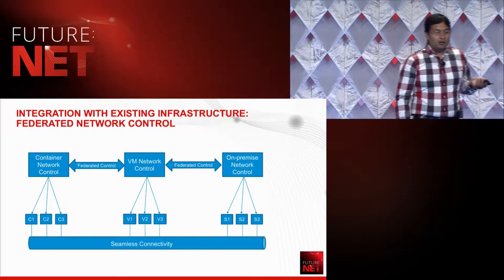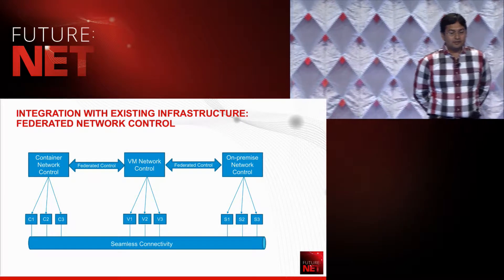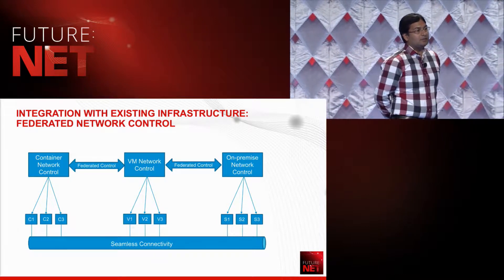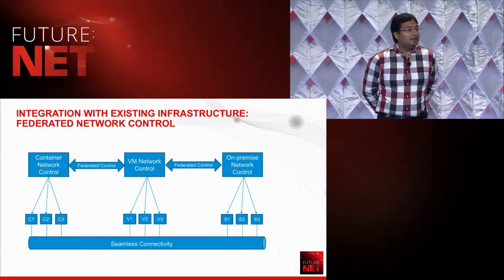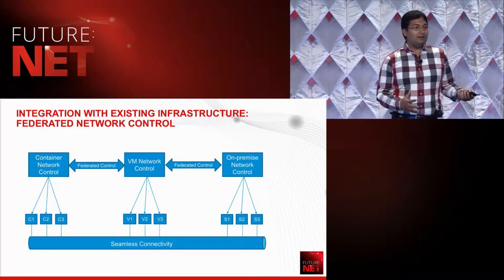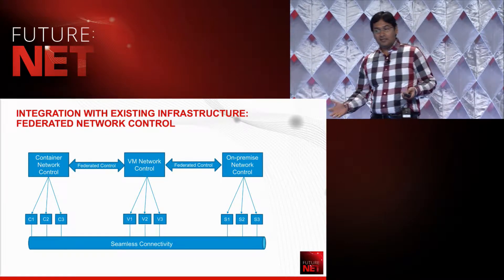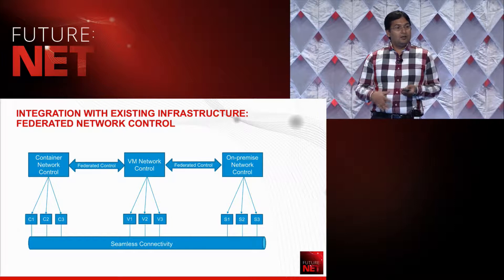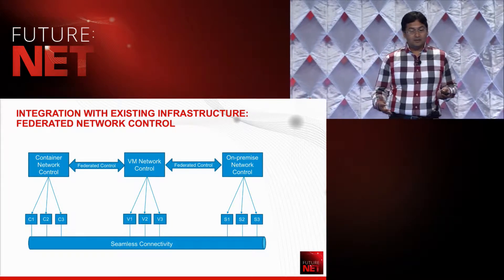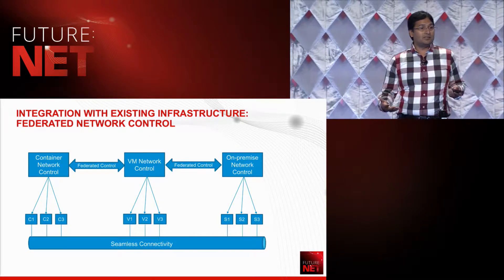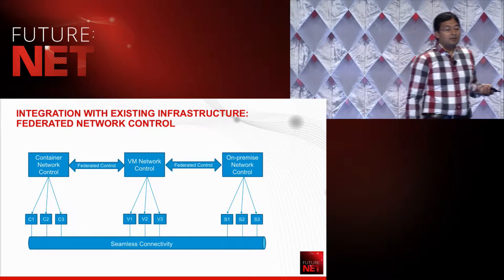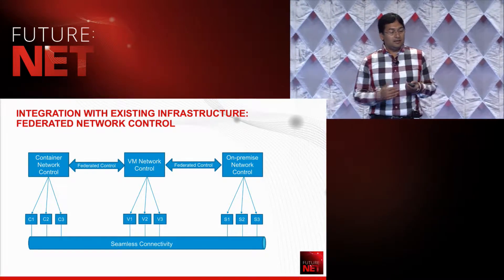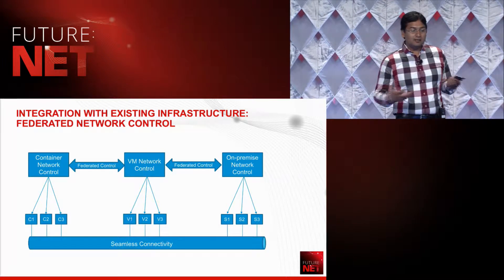Let me start with the first problem customers talk about: integration with existing infrastructure. One of the things we've been working towards is what we call federated network control. Customers may have different network control planes — a container-level network control for container-based deployments, a VM network controller for VM deployments, and another network control running on-premise. These network controllers need not be from the same vendor. By federating between them, you get a consistent view of the network and seamless connectivity across all these application infrastructures.